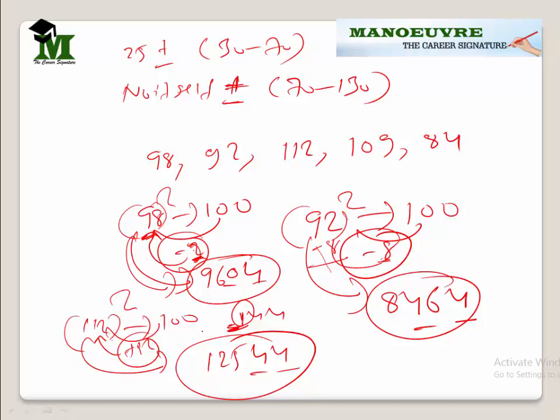Simple rule: if the number is more than 100, you add to the number itself; if it is less, you subtract from the number itself.